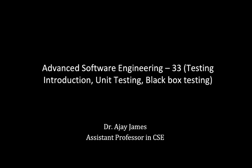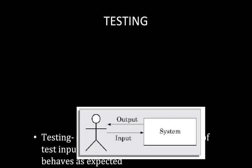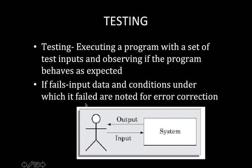In this lecture we will see an introduction to testing, unit testing, and black box testing. The aim of program testing is to find out the defects in the program. We try to execute a program with a set of test inputs and observe if the program behaves as expected. If it fails, the input data and conditions under which it failed are noted for error correction.